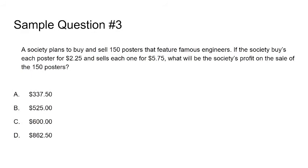Sample question number three: A society plans to buy and sell 150 posters that feature famous engineers. If the society buys each poster for $2.25 and sells each one for $5.75, what will the society's profit on the sale of 150 posters? If you subtract $2.25 from $5.75, that gives us $3.50 of profit per poster. So we use the calculator tab and do 3.5 times 150, which gives us $525. The answer would be B.